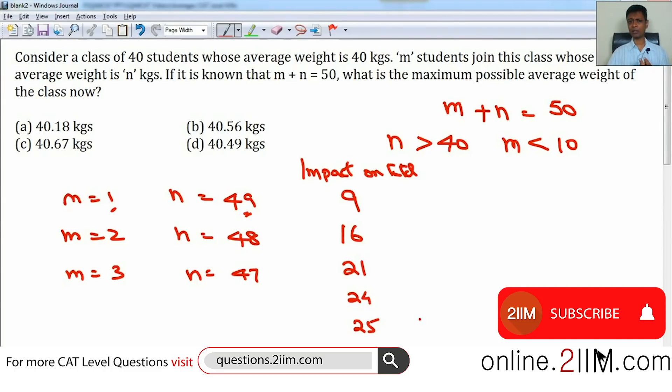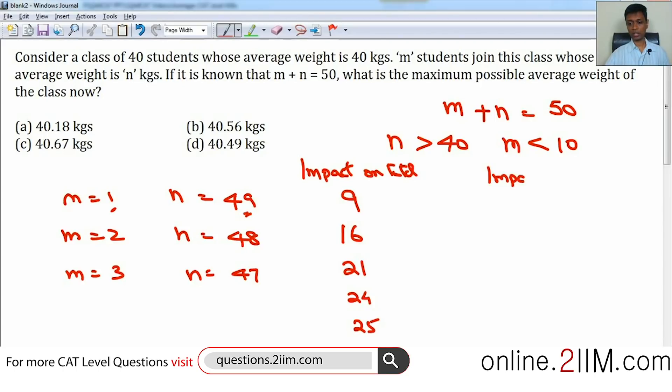We can sense that the higher the impact on total, the more the average would change. But it's not just the impact on total that matters. Now again, we'll have to look at the number of entities that are there. So this is the impact on total. Suppose we had to calculate impact on average.